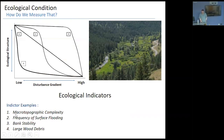From that we get a gradient of response for each system structural component. As we go from low to high disturbance, we may see a monotonic decline in microtopography on the floodplain, or frequency of flooding decreasing until it's riprapped and just disappears. Bank stability may hold really well until it hits some threshold and then totally starts to fall apart. Large woody debris might be pulled out immediately as soon as disturbance begins.